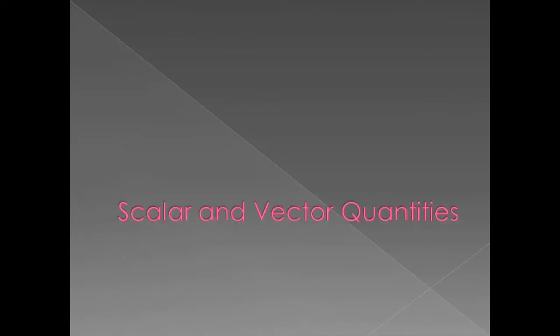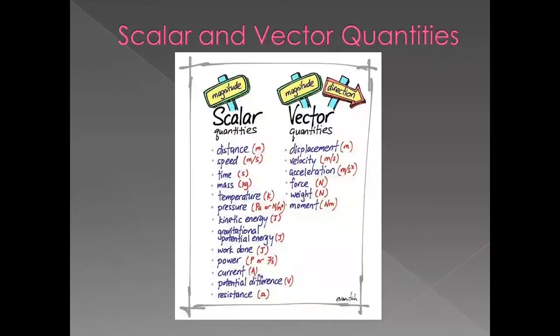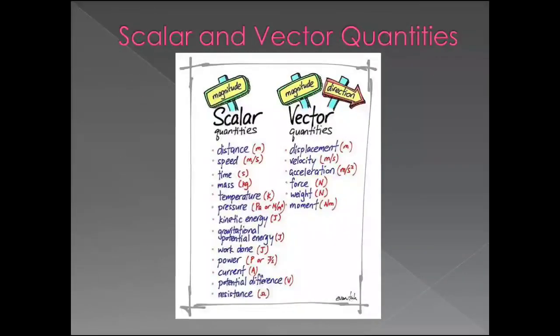Scalar and vector quantities. The physical quantities which have only magnitude and there is no sense of direction are called scalar quantities. For example, length, area, volume, time, etc.